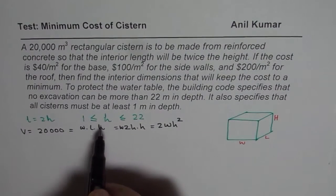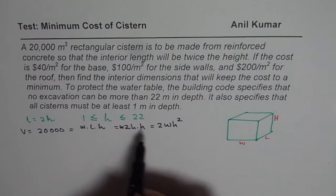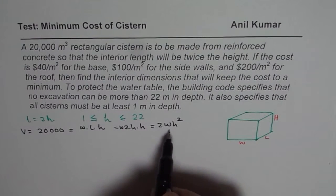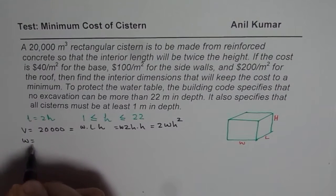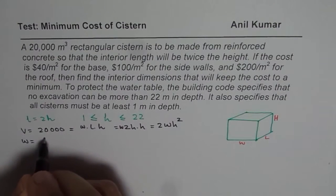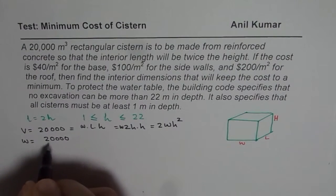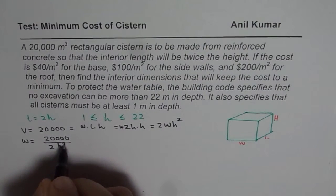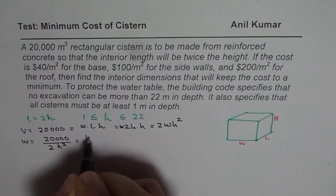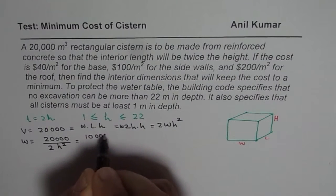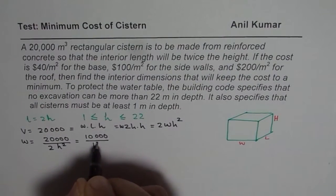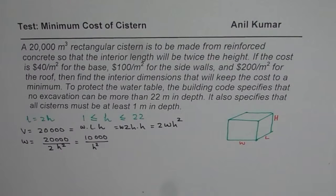Since we need an expression in height, we can find width in terms of height. From the volume equation, width equals 20,000 divided by 2h squared, which simplifies to 10,000 over h squared. That is how width is related to height.